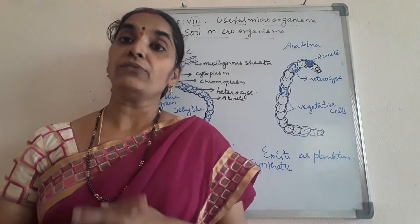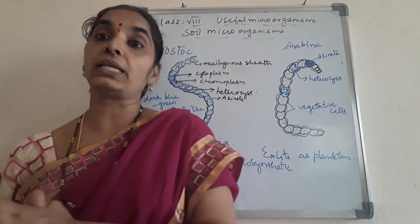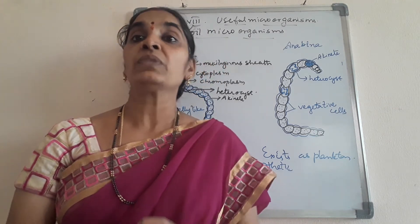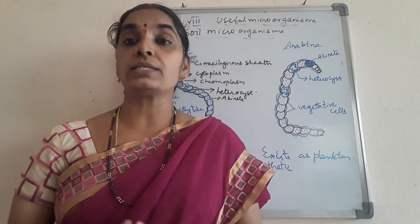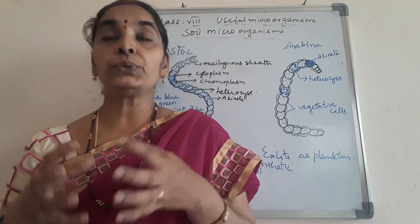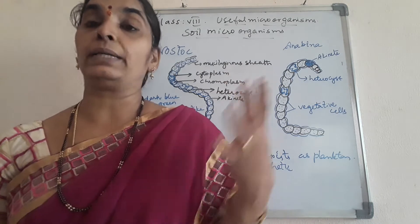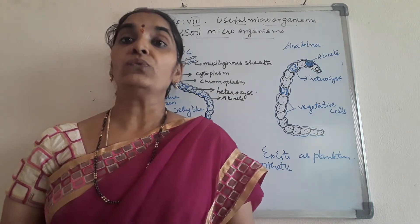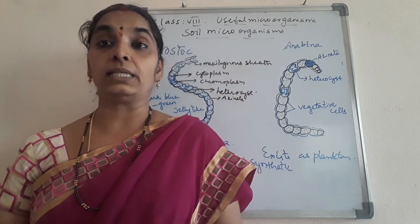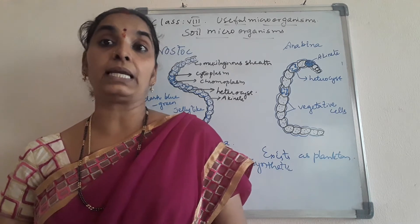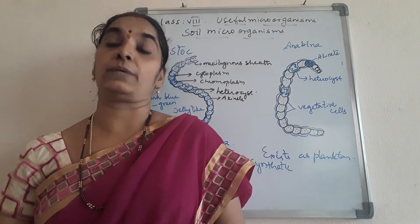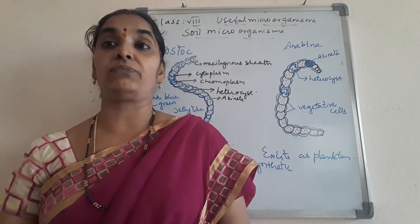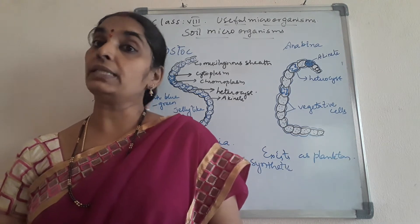Microorganisms in the soil convert atmospheric nitrogen into nitrates and supply them to plants. You know that the atmosphere consists of several gases, and nitrogen is one of them — about 78 percent of the air is composed of nitrogen.